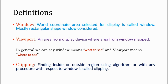One more concept is clipping. Clipping means finding or separating the required or interested area. Simply, you can say it is finding the inside or outside region using some algorithm with respect to the window. For example, if you have a group photograph in paint and you want to clip one person's photograph, you select that area using a rectangular window, clip it, and save it somewhere. That is called clipping — removing unwanted parts using algorithms.